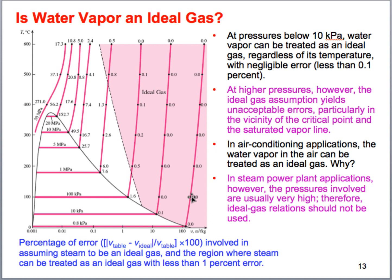At high temperatures, when the reduced temperature (T/T_critical) is above two, we can assume ideal gas behavior with very good accuracy regardless of pressure — except when the reduced pressure is much greater than one. We must be very careful near the critical point, where ideal gas behavior no longer applies.